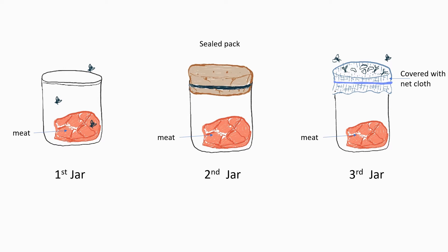To prove this, Francisco Redi did an experiment. He took three jars, and in every jar he placed a piece of meat. He kept the first jar open, tightly sealed the second jar, and covered the third jar with net cloth. After a couple of days, he observed that flies were attracted to all three jars, but in the second jar, which was tightly sealed, there were no flies inside. The first jar had lots of flies and maggots on the piece of meat, and the third jar had flies and maggots but only on the net cloth, not inside the jar.